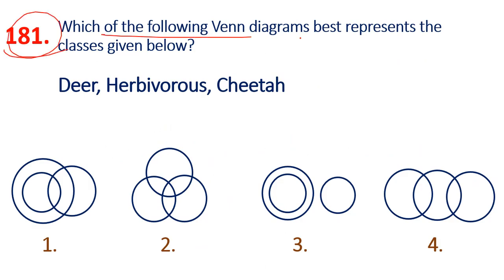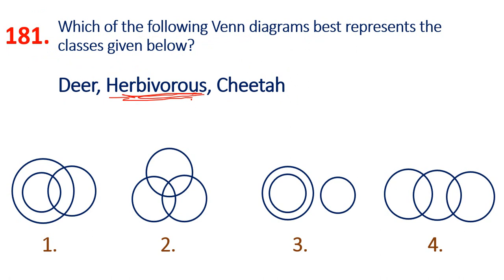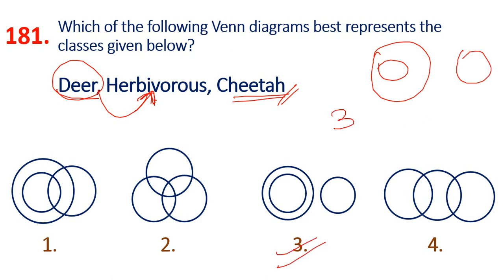First question: which of the following Venn diagrams best represents the classes given below — Deer, Herbivores, Cheetah? Herbivores are animals that eat only plants. Carnivores eat only non-veg. Deer is a herbivore, and Cheetah is a carnivore, so they are separate. Herbivores contain Deer, and Cheetah is separate. So that is option 3. Option 3 is the answer.